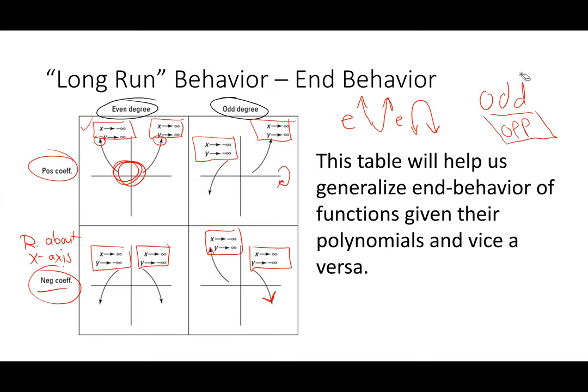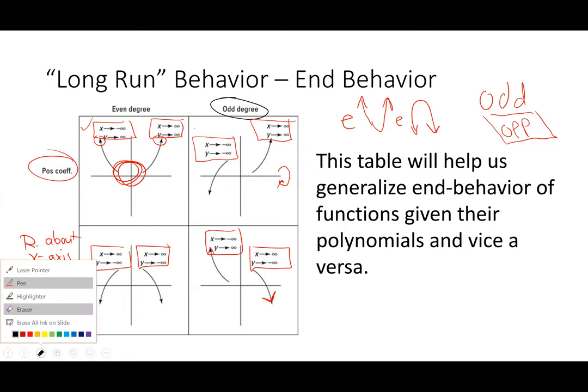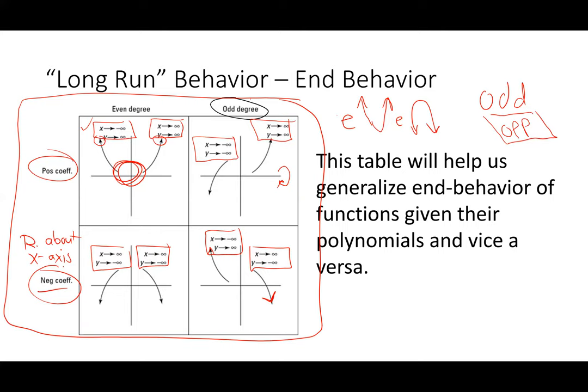This skill has very little to do with deep mathematical knowledge — it's a memorization thing. You need to have this committed to memory. Given any polynomial, you need to be able to state its end behavior just by looking at it: discern the degree, determine if it's even or odd, look at the leading coefficient, determine if it's positive or negative, and state the end behavior. Make sure you have this table internalized.